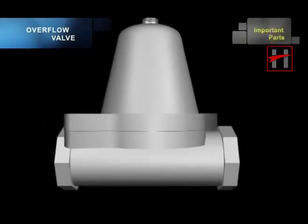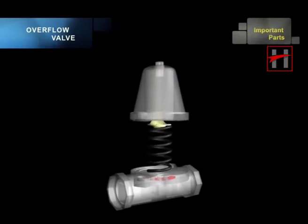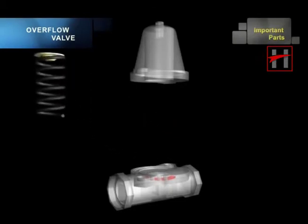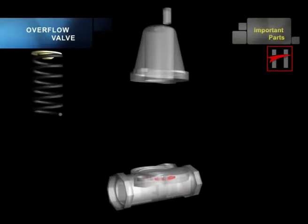The important parts of the overflow valve are the valve housing, spring casing, compression spring, set screw, and diaphragm.